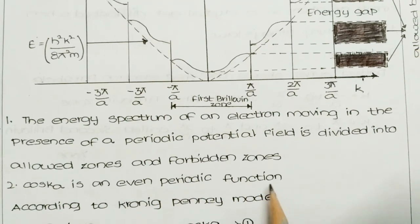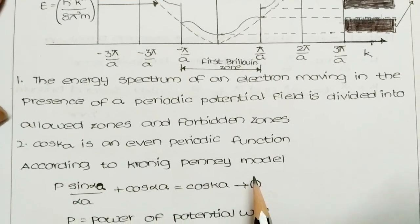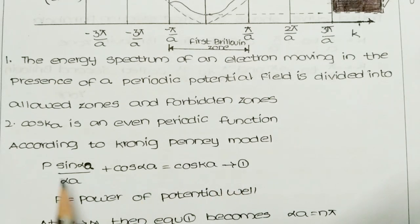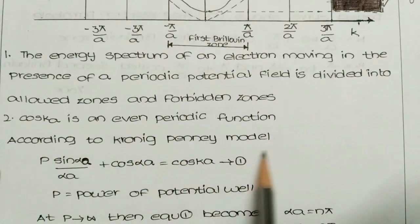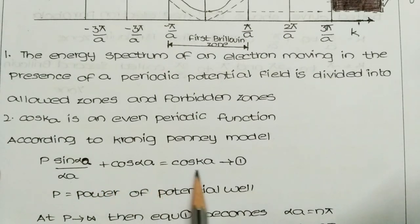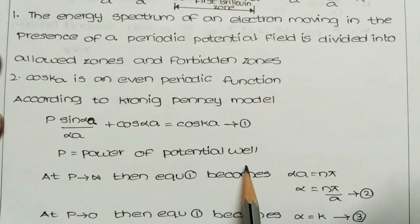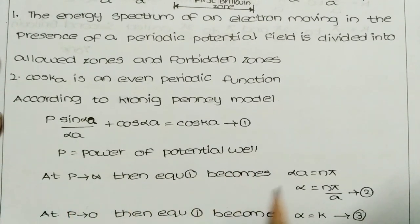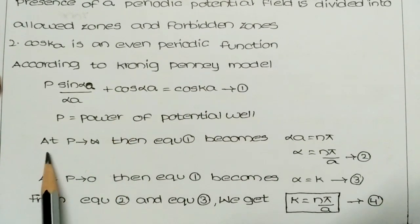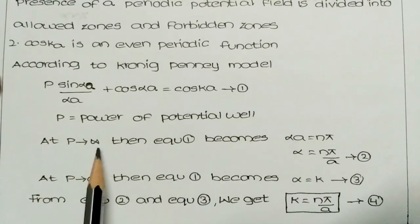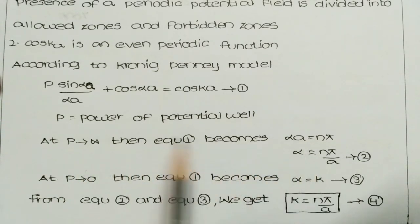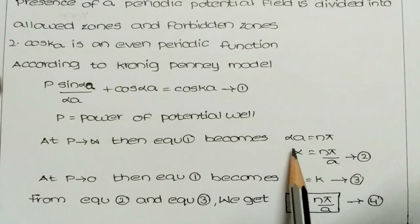cos(ka) is an even periodic function. According to the Kronig-Penney model, as I already told you in my previous lecture, the equation is: P·sin(αa)/αa + cos(αa) = cos(ka). This is equation number one, where P is called the power of the potential well. Now I will take the case study of this equation when the power of the potential tends to infinity.